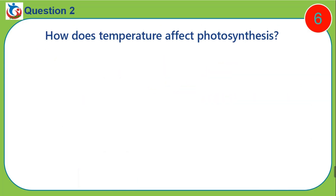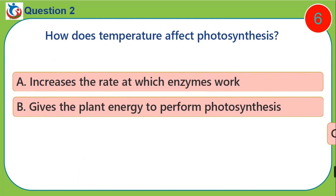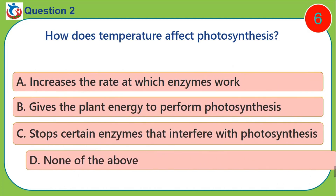Question two: How does temperature affect photosynthesis? A) increases the rate at which enzymes work, B) gives the plant energy to perform photosynthesis, C) stops certain enzymes that interfere with photosynthesis, D) none of the above.